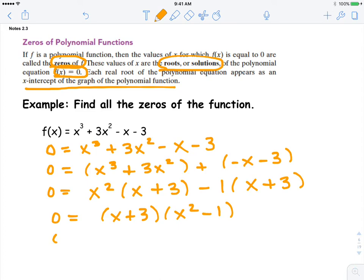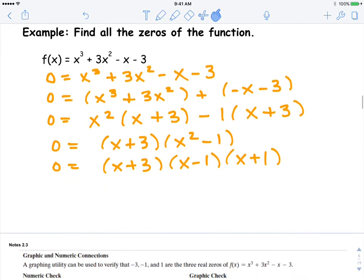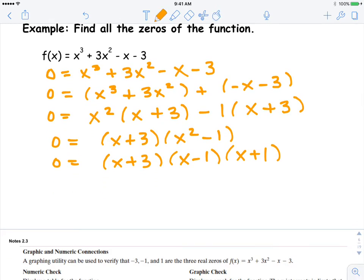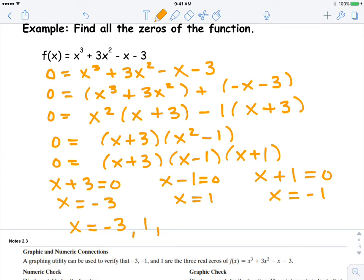Both of those parentheses are the same. That is your new GCF. And then your leftovers go on the second parentheses, x squared minus one. Now we're going to factor the second parentheses using the difference of two squares. Now I have it completely factorized. We use the zero product property, setting each factor equal to zero. Then we solve them separately for x by undoing. So we would subtract three, we would add one, we would subtract one. These are the three zeros of the function.